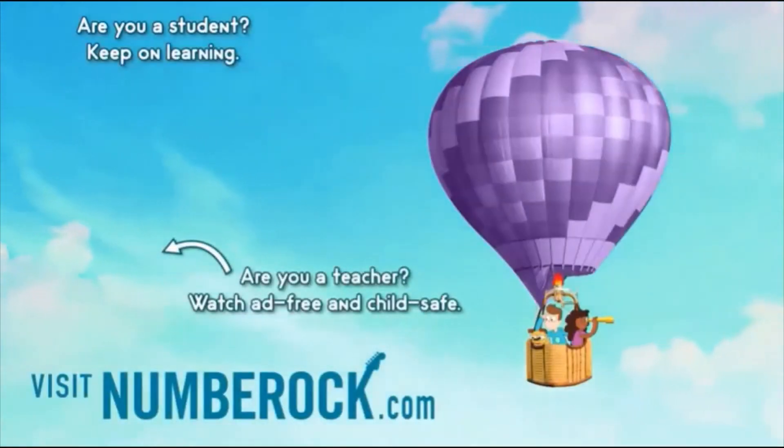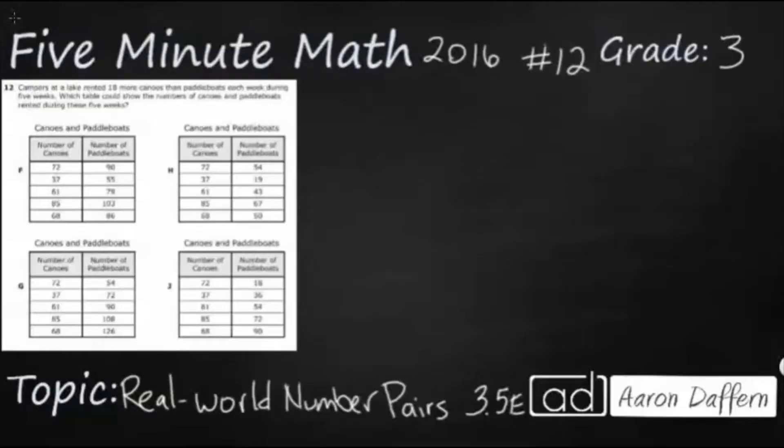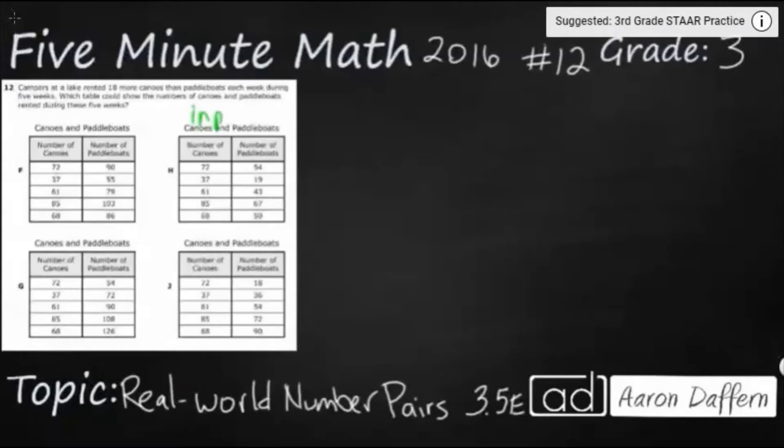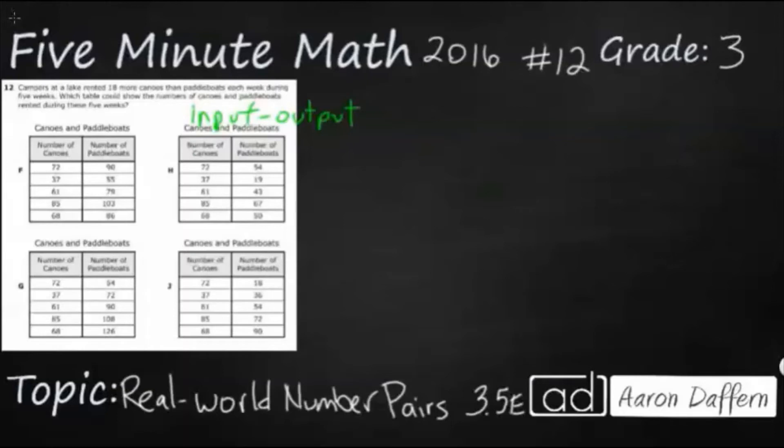Visit numberrock.com. For exclusive content, lesson materials. Question number 12 of the 2016 released Star Test. If you have not done so already, please go ahead and take a moment to pause this video, work it out on your own, and then when you're done, unpause it. Let's look at our answers together. So our answer is going to be in the form of these tables. And sometimes we'll call these input-output tables. And we will be looking for a rule or some kind of pattern to go from your left to your right side. Let's look at our problem.